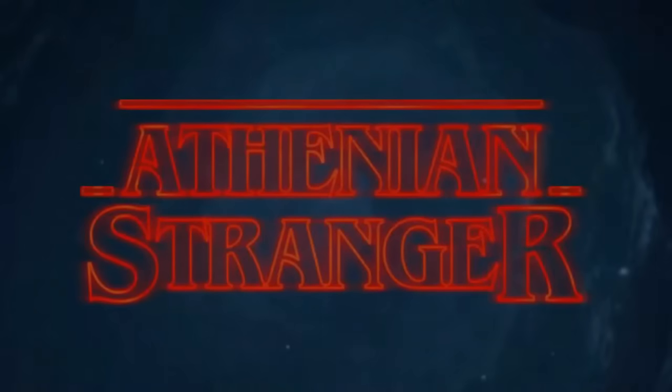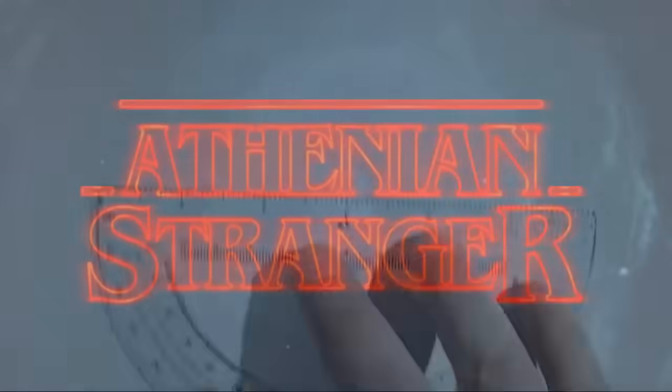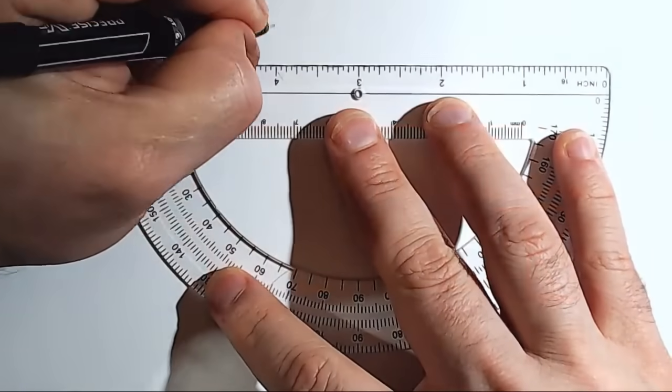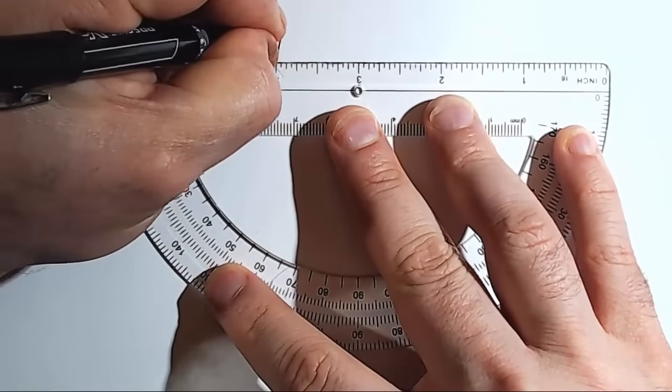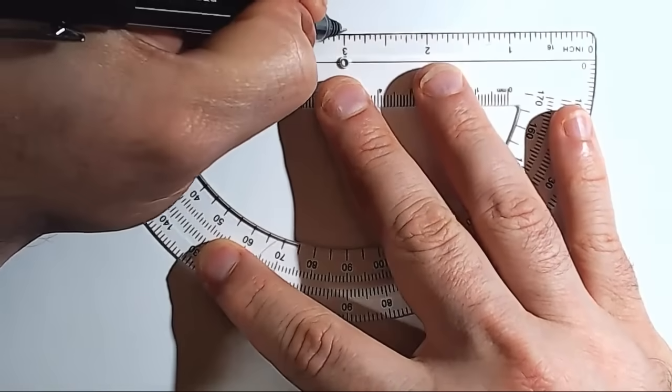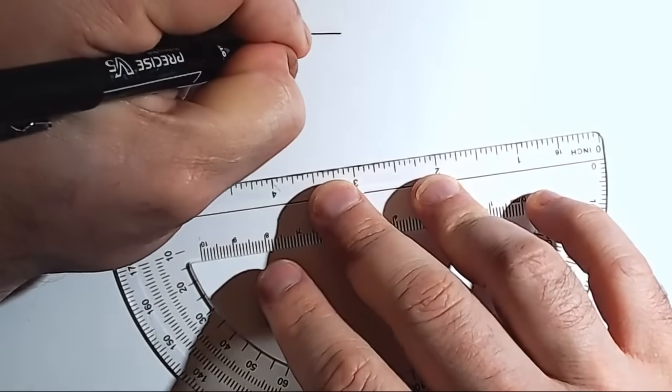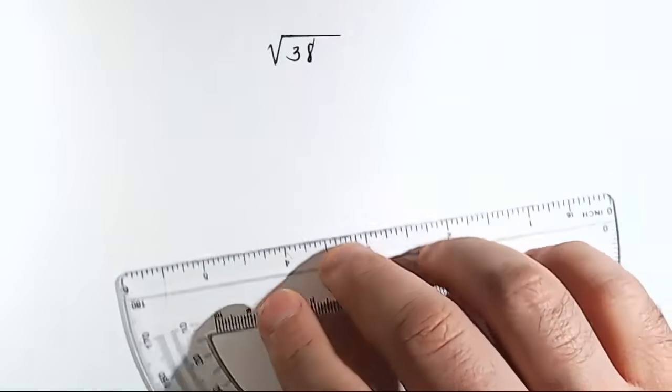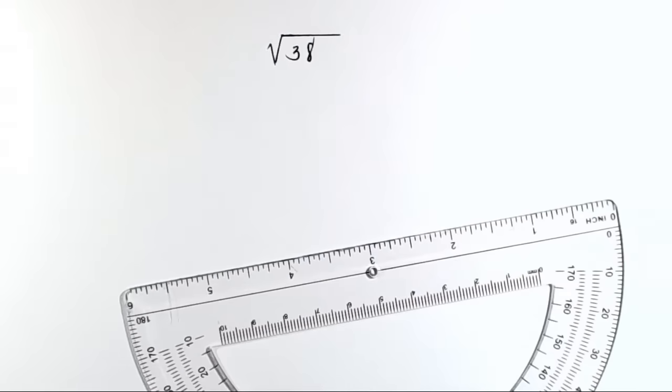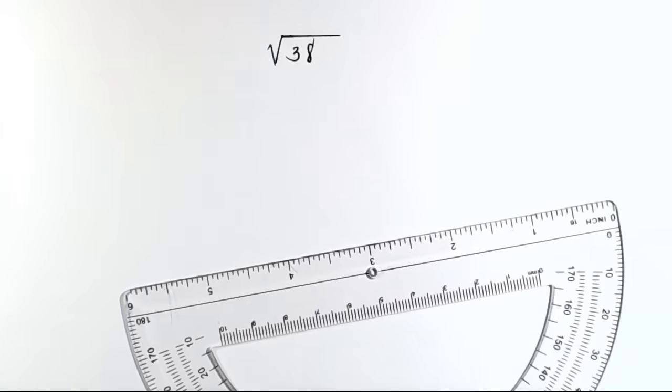All right, ladies and gentlemen, welcome back to this Athenian Stranger tutorial video, where today we are going to learn how to take a square root entirely by hand. Let's take a look at this lost art here by evaluating the square root of 38 out to two decimal places.